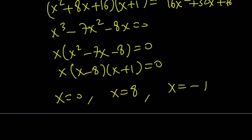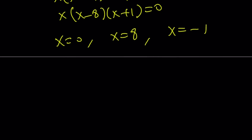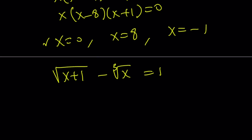Let's plug them in to verify. Our original equation is square root of x plus 1 minus cube root of x equals 1. If x equals 0: 1 minus 0 equals 1. True — x equals 0 checks. If x equals 8: 3 minus 2 equals 1. That also checks. If x equals negative 1: 0 minus negative 1 equals positive 1. So it also checks. All three solutions are valid, which is really cool. When I show you the graph, you'll have a better idea.